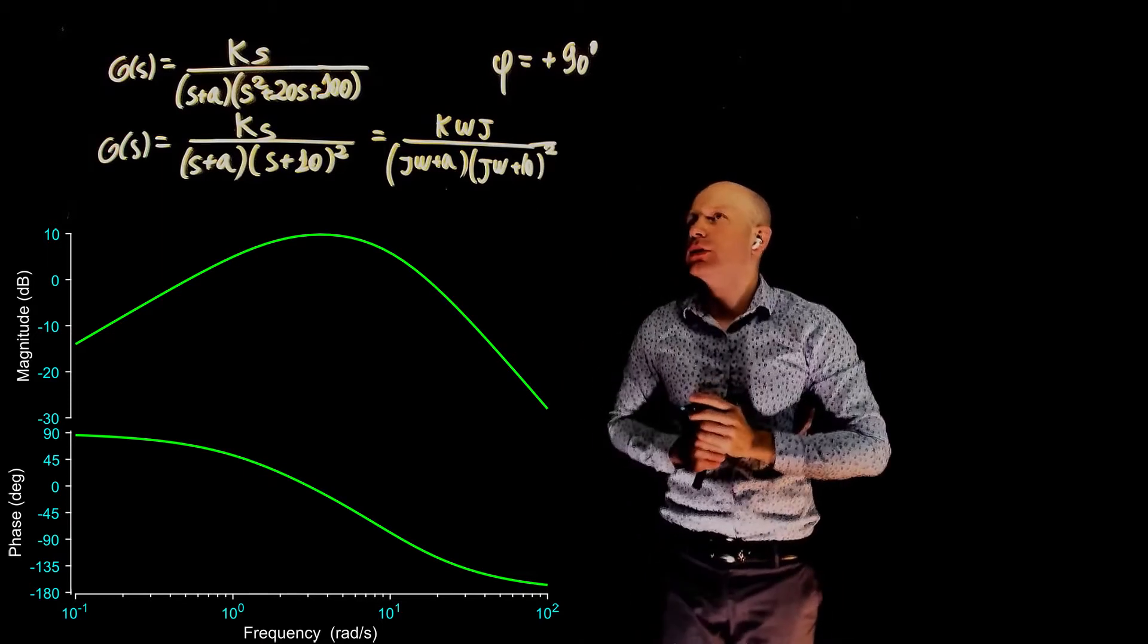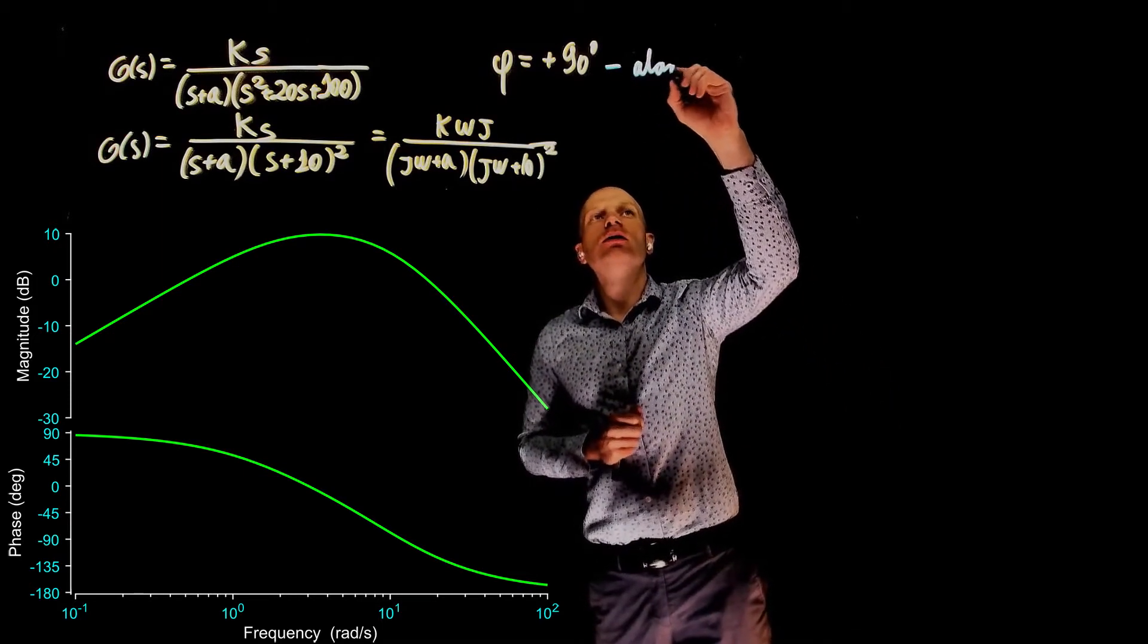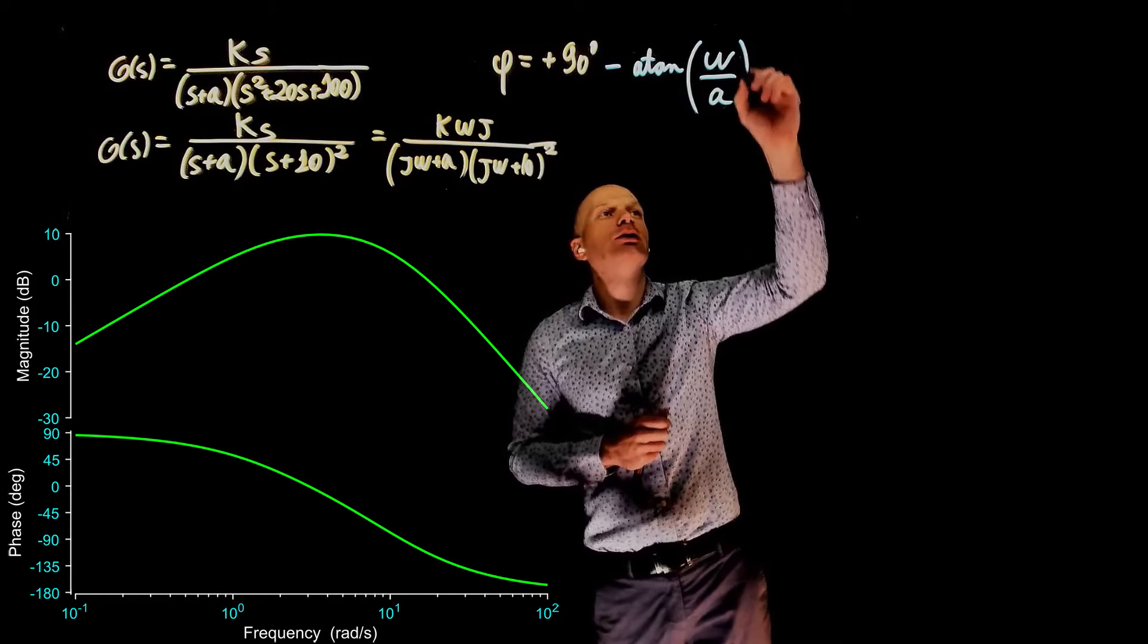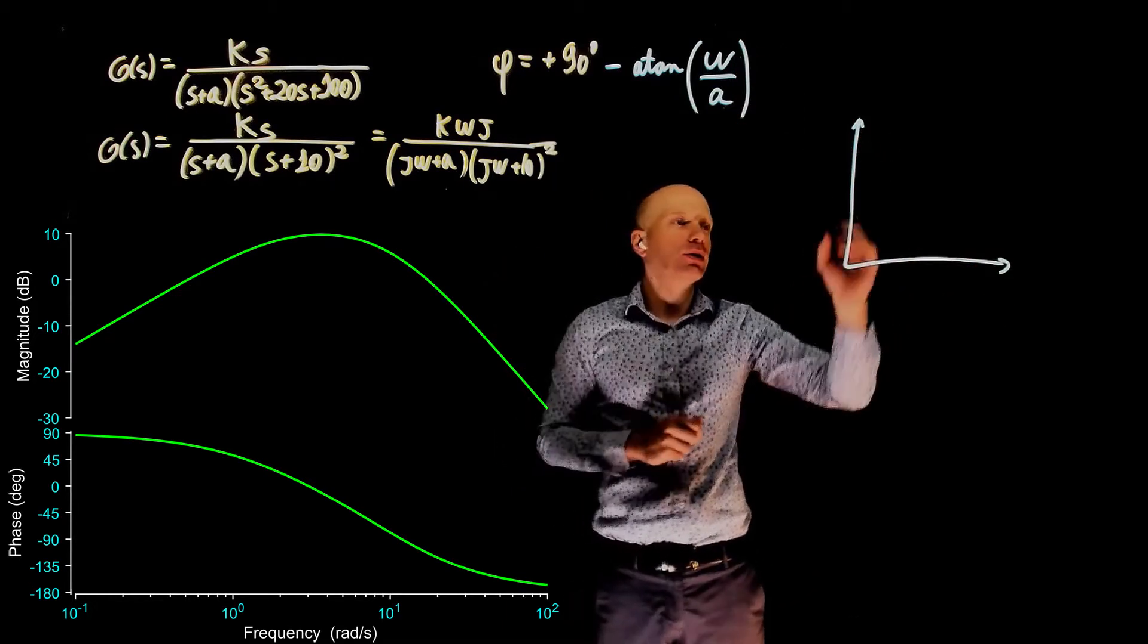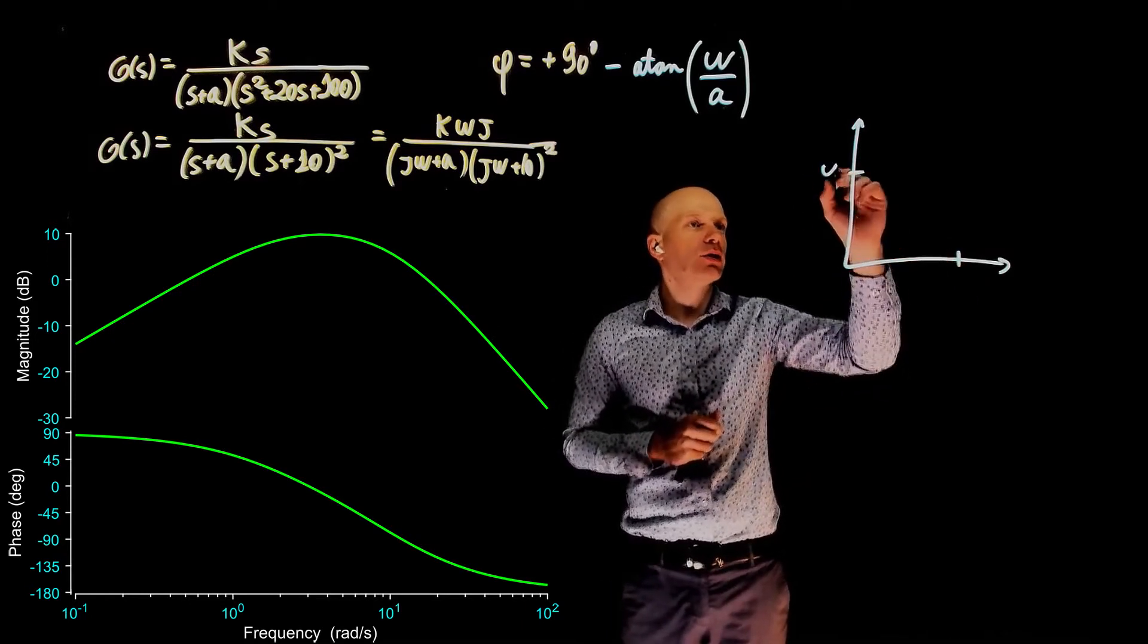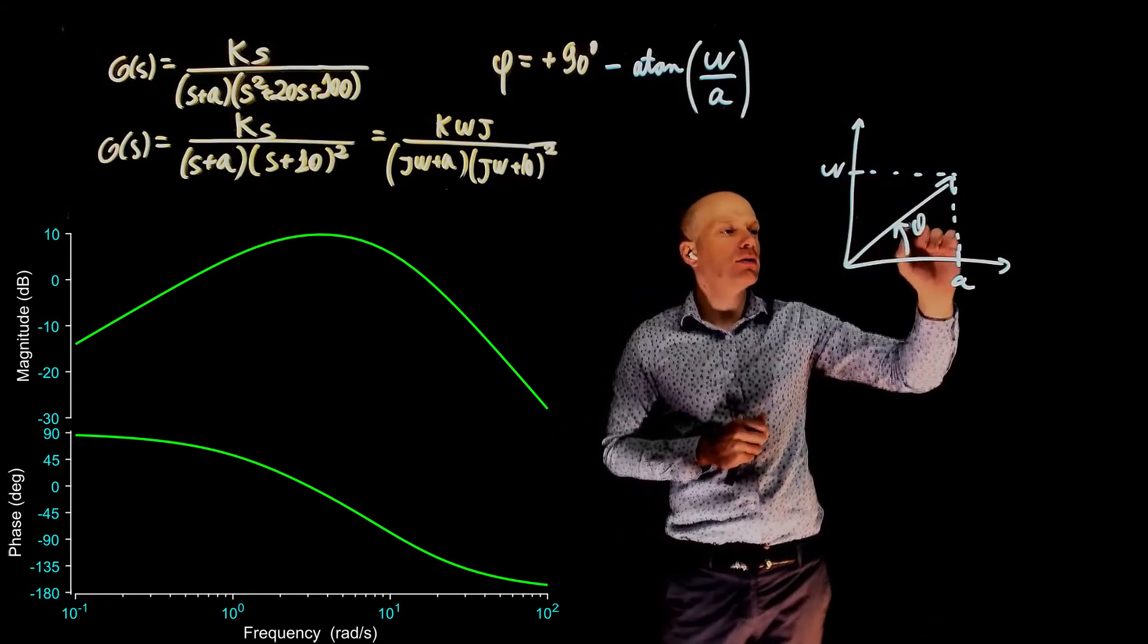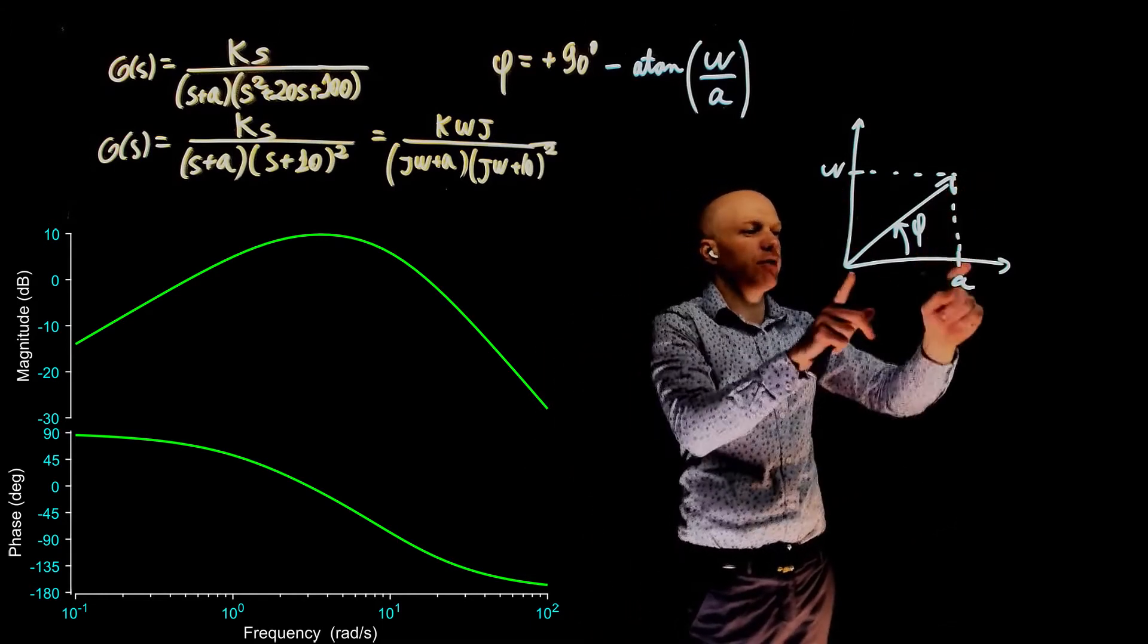Now we have this real pole. The pole adds a phase of negative arc tangent of the imaginary part divided by the real part, a. Again, we can plot that and if you see for this pole, the real part is a and the imaginary part is omega. The vector is here. Here is the angle, arc tangent of this divided by that, imaginary divided by real.